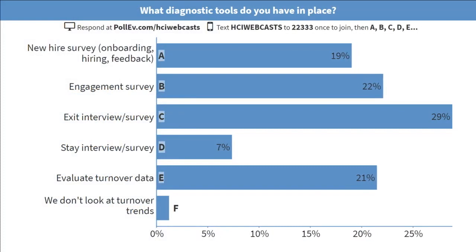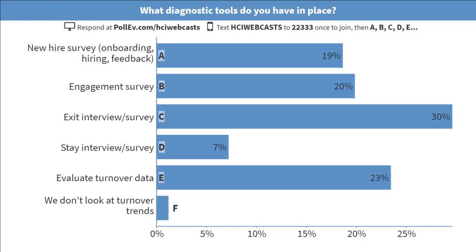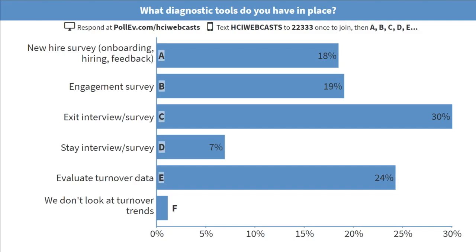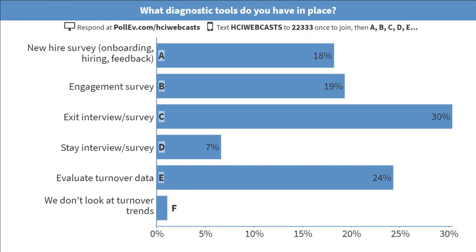We're really seeing representation across the board, which tells us you do have some great mechanisms in place today. It's interesting how the stay interviews are smaller — that's probably one of the easier surveys to actually get information on, but they're really new. The traditional exit interview is kind of leading the charge. The exit interview generally has a smaller sample size — you're capturing those that are really upset, kind of like customer surveys. But it probably does give you some good honest data. Your best bet is to have a good mixture so that you're taking a real multi-method approach.